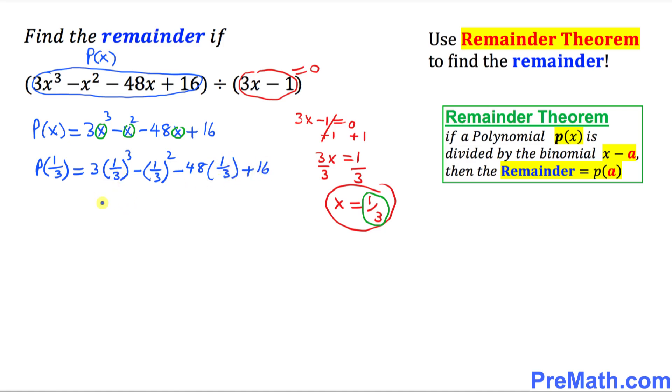Let's take care of these exponents. So this is going to be 3 times 1 over 27 minus 1 over 9. Here this 48 and 3, they reduce to negative 16 and this positive 16. Here 3 and 27 reduce to positive 1 over 9 minus 1 over 9 minus 16 and plus 16.